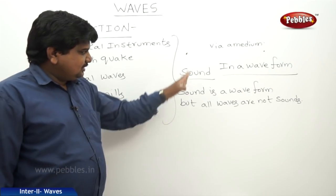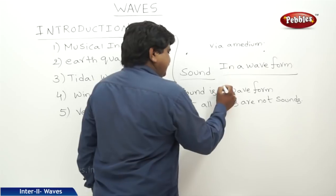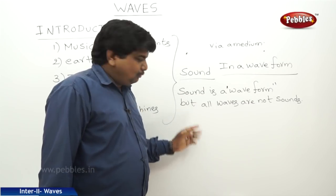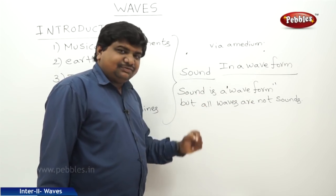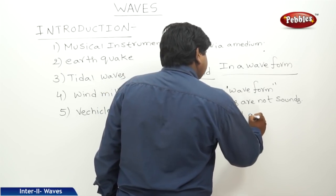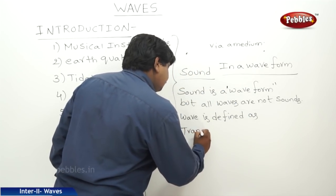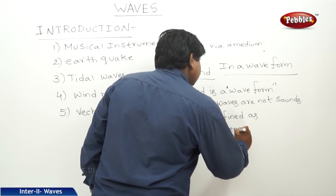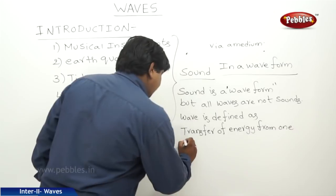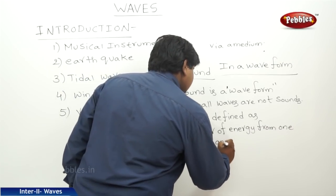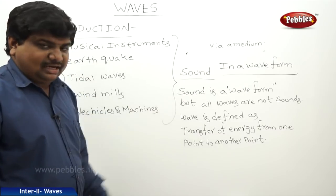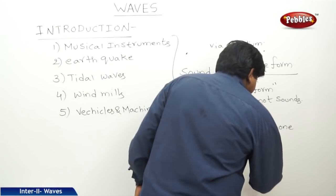Sound travels from source to receiver. So what is the definition of a wave? A wave is nothing but the transfer of energy from one point to another point without any transfer of the medium. The medium is not transferring — only the energy is transferring.